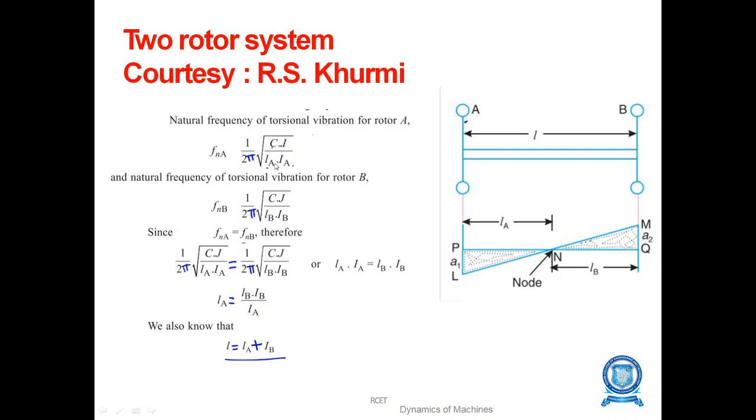And inertia for B rotor, length of A rotor from the center, and length of B rotor from the node point, which is equal, f_nA equal to f_nB. Therefore, LA becomes IB LB divided by IA. The total length is LA plus LB.